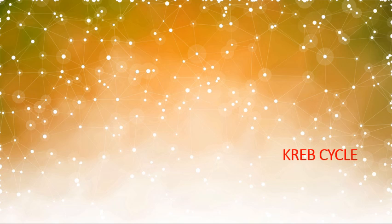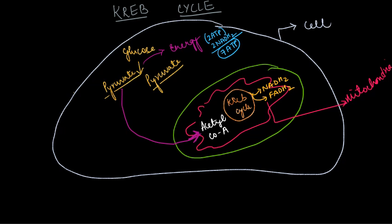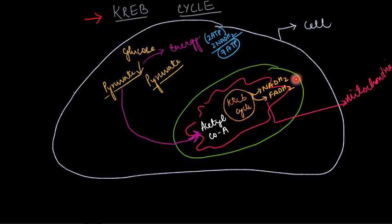Today we are going to deal with the Krebs cycle. Last class we covered glycolysis, and this class we will be dealing with the Krebs cycle. The Krebs cycle basically takes place in mitochondria. If you look at this diagram, this part is basically your cytoplasm, and this is what we call mitochondria. We know that glycolysis takes place in the cytoplasm.